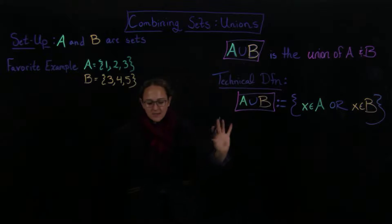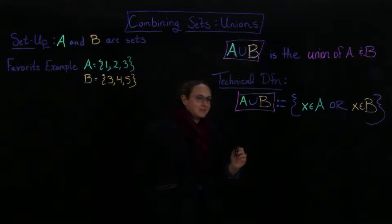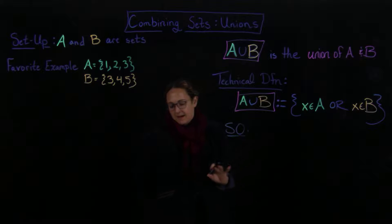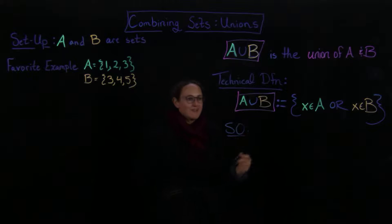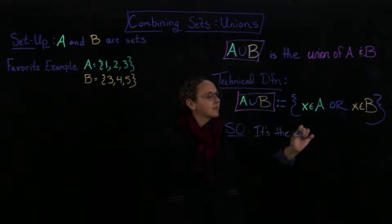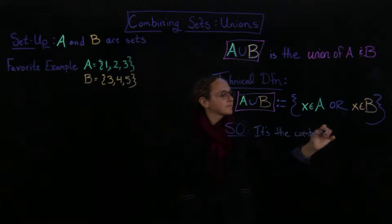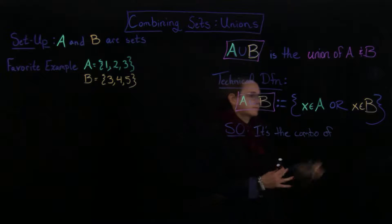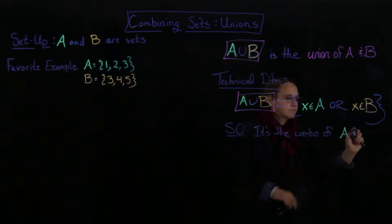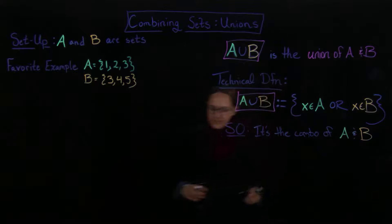Okay, so let's kind of look at what that actually means. So what is it? It's the combination of A and B. So it's the combination of A and B. So let's kind of draw this.